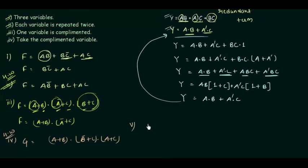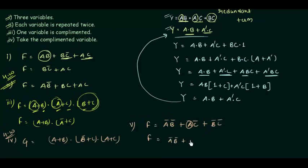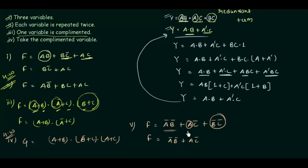Example five is very important because it is different. We have a-complement·b-complement or a·c-complement or b-complement·c-complement. Here all the terms are complemented except a. Initially we look for one variable that is complemented, but when all variables are complemented and only one is not, we take the variable that is not complemented — which is a. Since a appears in the first term as a-complement and in the second term as a, we take those two terms. The answer is a-complement·b-complement or a·c-complement, and the last term is omitted.